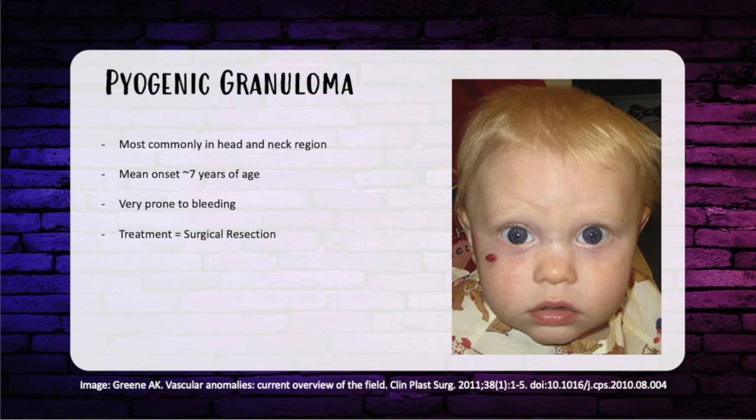The last tumor is pyogenic granuloma. These are usually found on the head and neck, with a mean onset around age seven, and they're prone to bleeding. Surgical resection is the definitive treatment — you cut it out and you're done. That's it for tumors.